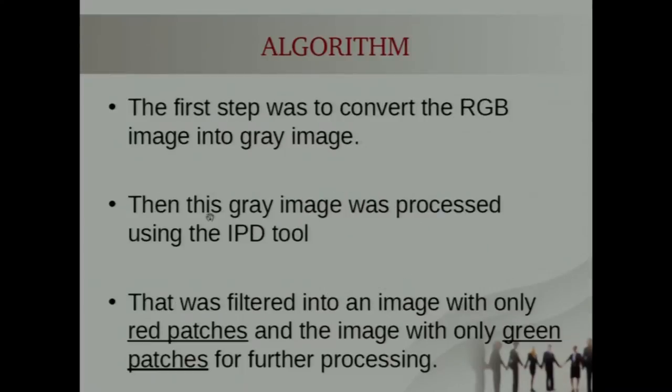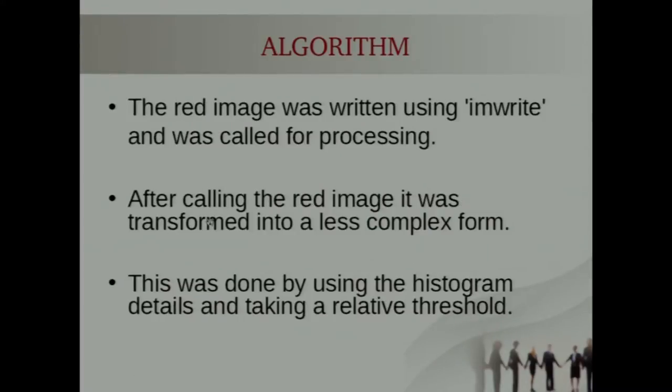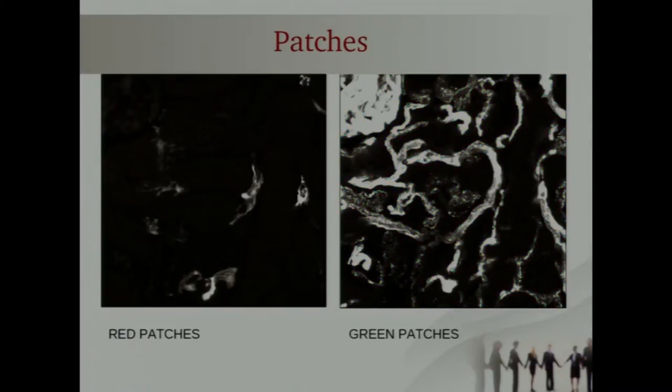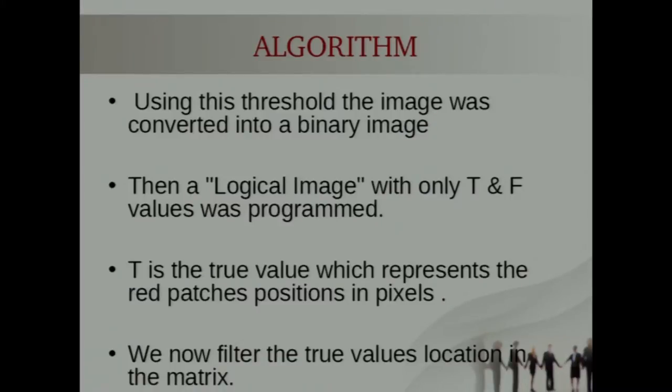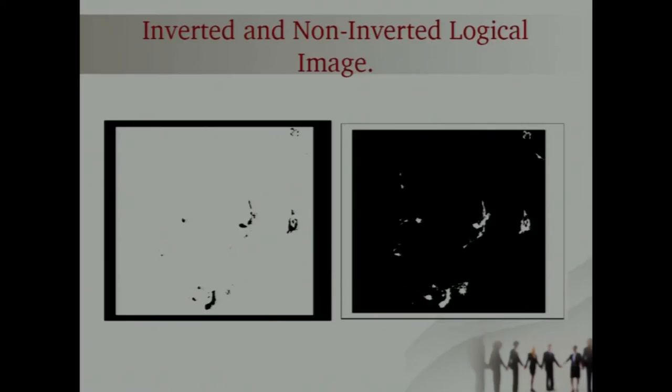The third phase was thresholding this image. We cannot process this image as such because it is very big and we cannot identify the values in the matrix where all the red patches are present. Using the histogram of the red image, this red image was transformed into a binary image first and then it was transformed into a logical image using only true and false values. It was inverted and in Scilab the black parts are the false part and the white part are the true part.